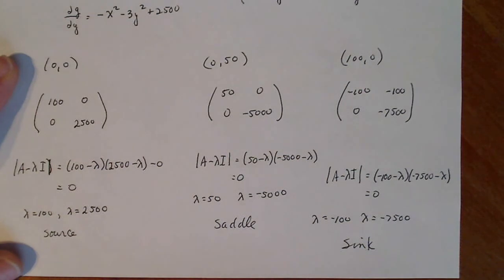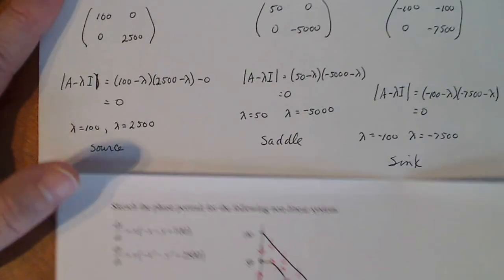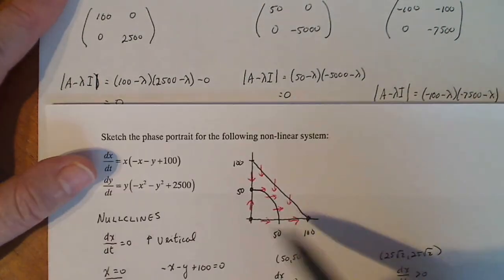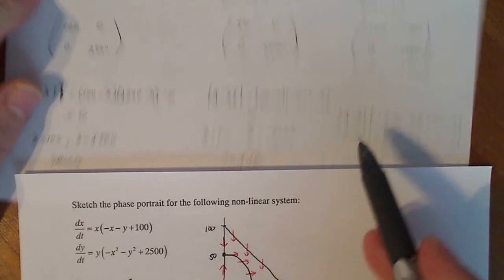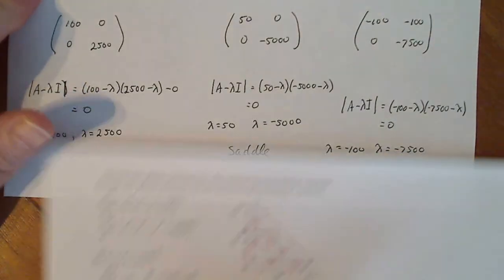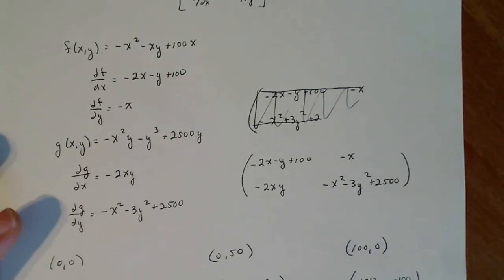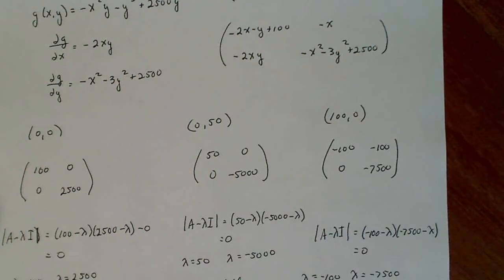And so I got a source, saddle, and sink. And if I go back to my previous problem, and I take a look at this picture, it looks like that's a source. That's a sink, yep, sink for (100,0). And then that's a saddle for (0,50). So it looks like everything matches up. My Jacobian and my nullclines all match up. So let's move on now to drawing the phase portrait.